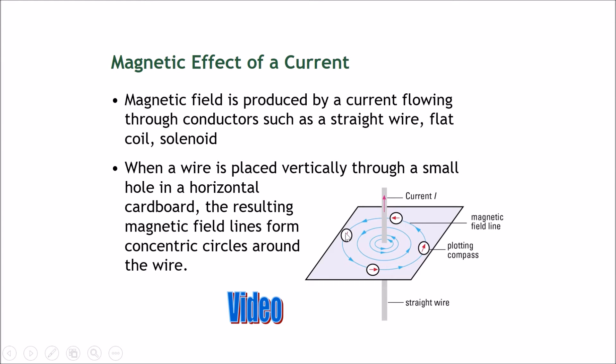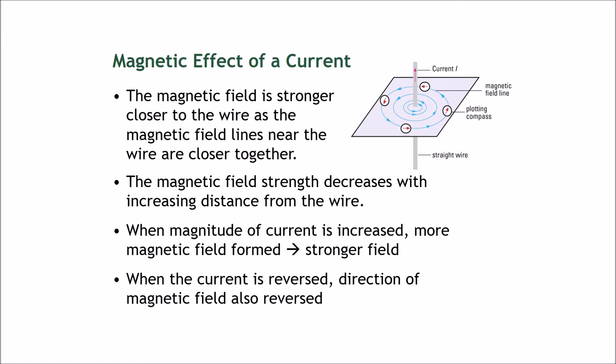The magnetic field is stronger if it's closer to the wire, as the magnetic field lines will be closer together. So you should actually draw the lines that are nearer to the wire as closer together, and the lines that are further from the wire as wider and wider and wider from each other.